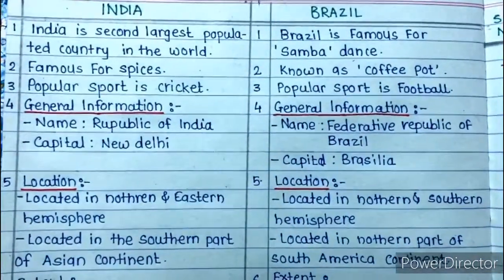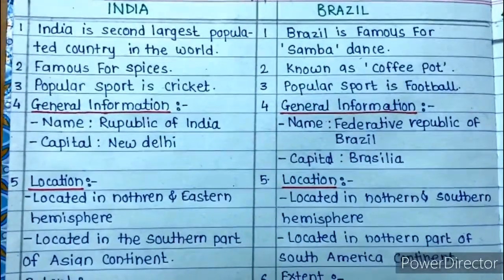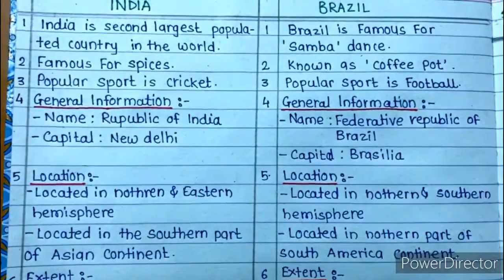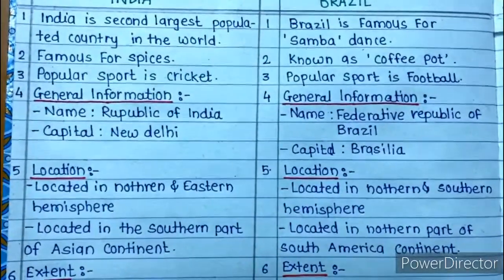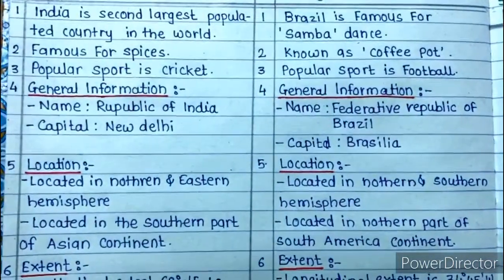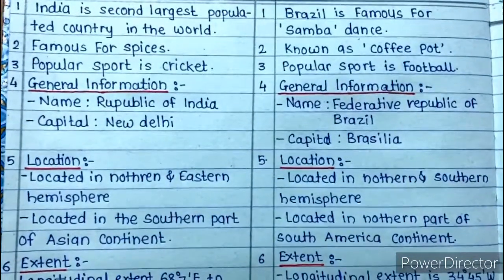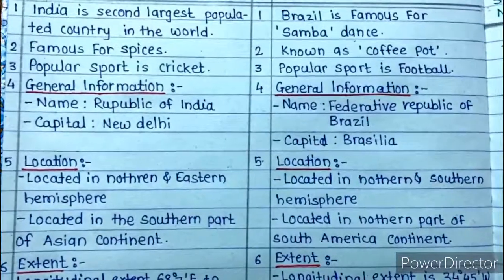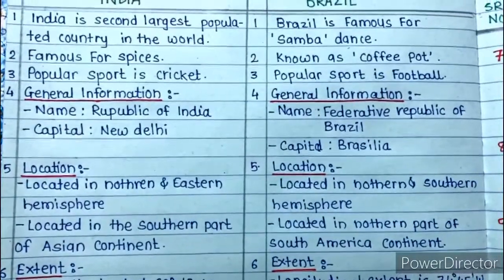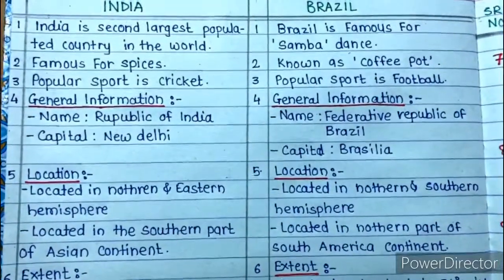The first point is general information about both countries. India is the second largest populated country in the world. Brazil is famous for its Samba dance, while India is famous for its spices. The popular sport in India is cricket, whereas in Brazil the popular sport is football. Now we move to information directly included in the syllabus.